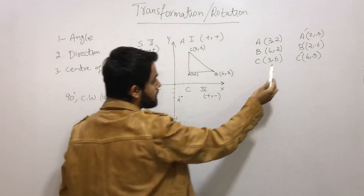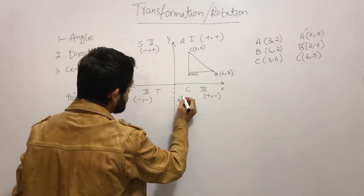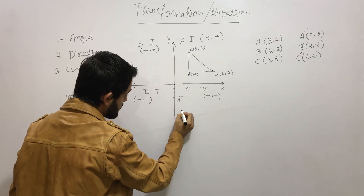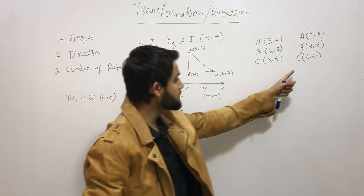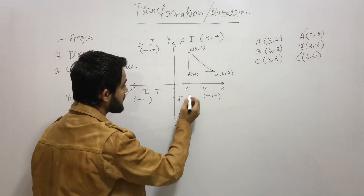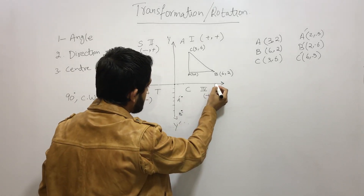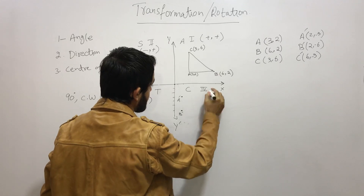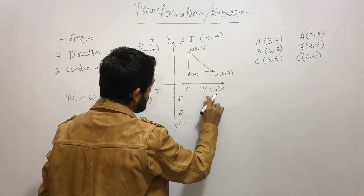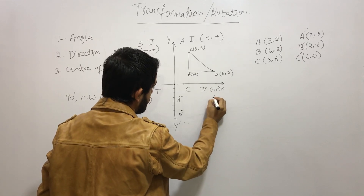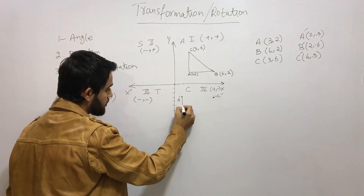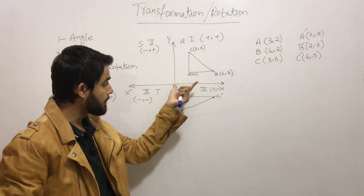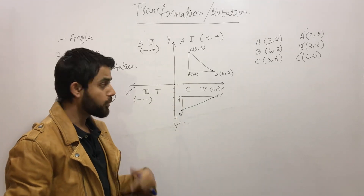B prime is (2, -6): X is 2, Y is -6. C prime is (6, -3): X is 6, Y is -3. Now join these three points and you can see we have successfully rotated the triangle 90 degrees clockwise, keeping the center at the origin. The original figure is called the object and the rotated one is the image.